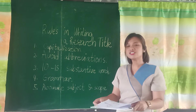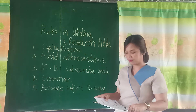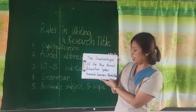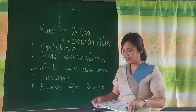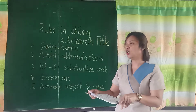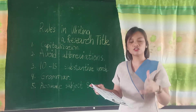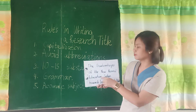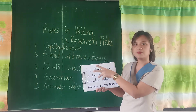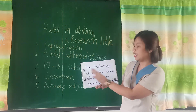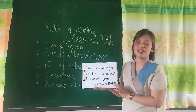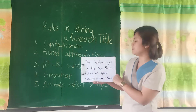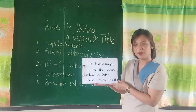Let's move on to the next research title example: 'The Disadvantages of the No-Normal Education System Towards Learners' Mental Health.' This is still a very timely title because, as we all know, mental health is of vital concern at this time of pandemic. Let's check the capitalization — the important words are capitalized: Disadvantages, No, Normal, Education, System, Learners, Mental, Health. We do not capitalize prepositions. And there are no abbreviations used.